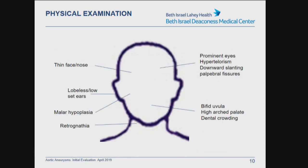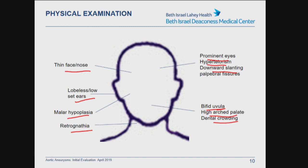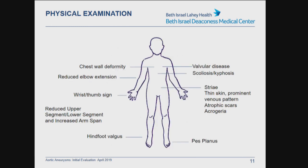In terms of physical exam features to look out for: do they have a thin face or nose? Do they have prominent eyes, hypertelorism, downward slanting palpebral fissures? Lobeless or low-set ears, malar hypoplasia — low-set cheekbones — retrognathia? A bifid uvula is seen in Loeys-Dietz, and a high arched palate or dental crowding is not infrequently seen in Marfan syndrome. There are scoring systems like the Ghent criteria that incorporate many of these physical exam findings and historical features into a score predicting likelihood of a connective tissue disorder. With the increasing frequency of genetic testing, it is a bit easier to identify if a particular mutation is present.